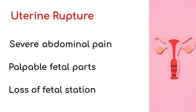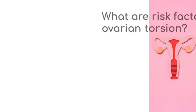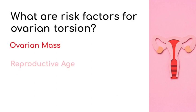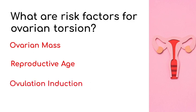What are risk factors for ovarian torsion? An ovarian mass, a young woman of reproductive age, and ovulation induction. If a woman is undergoing fertility treatment and the question mentions sudden onset severe unilateral abdominal pain, we have to suspect ovarian torsion.